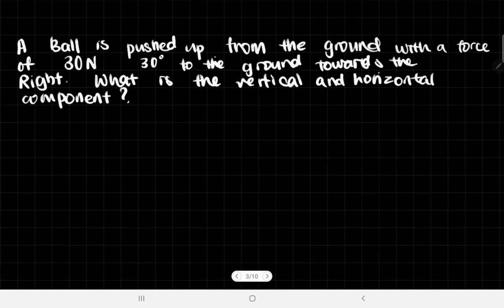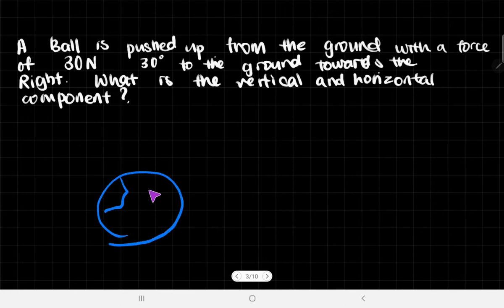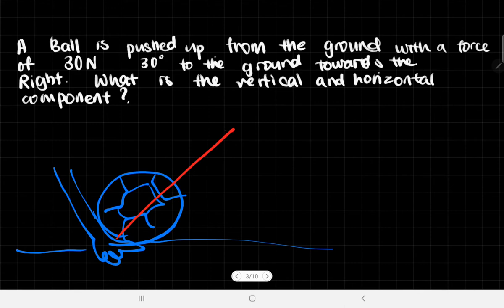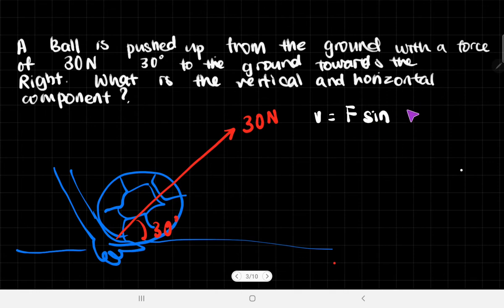With that information we can solve some problems. A ball is pushed up from the ground with a force of 30 newtons at 30 degrees to the ground towards the right. What are the vertical and horizontal components of this force? We can picture this: there's a ball on the ground and a hand pushing it upwards at 30 newtons, making a 30-degree angle. So the vertical component, as we've learned, is F sin θ.